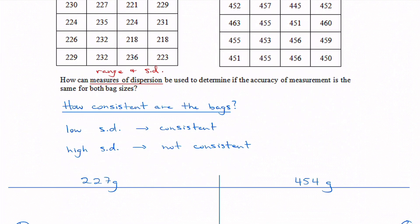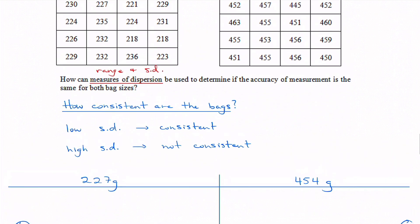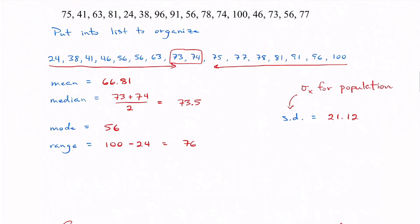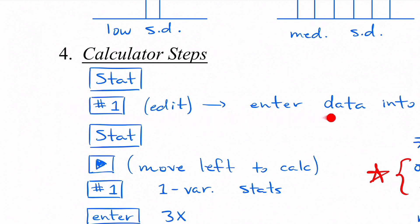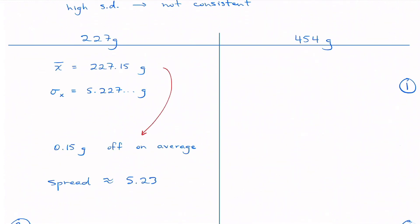I'll group the information into a table with 227g bags on one side and 454g bags on the other. To calculate, you take all the data points, put them into a list, and use the same steps as before: type into a list, click Stat, go to Calc, run 1-Var Stats. For the 227g bags, the mean is 227.15g — only 0.15g off from what it should be — and the standard deviation is 5.227g, so the spread is about 5.23g.